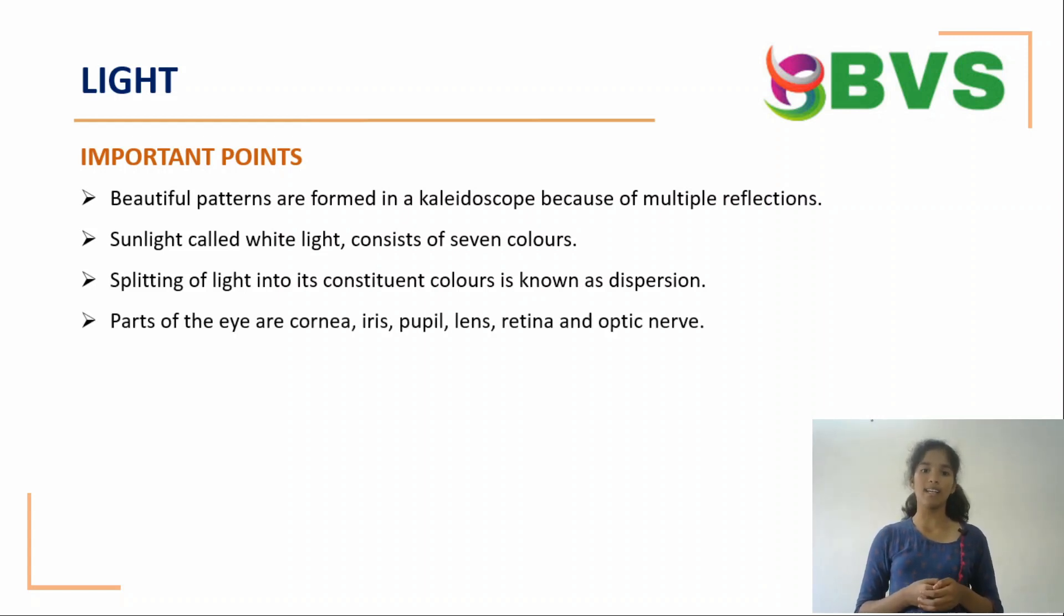Parts of eye are: cornea, iris, pupil, lens, retina, and optic nerve. The normal eye can see nearby and distant objects clearly.